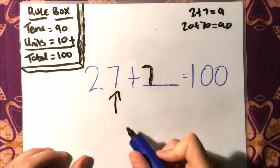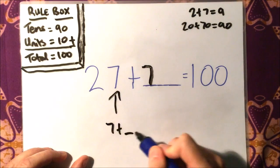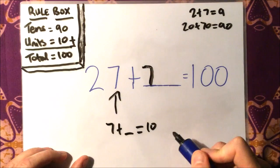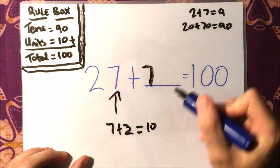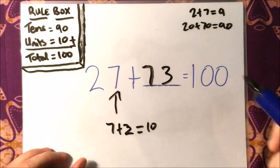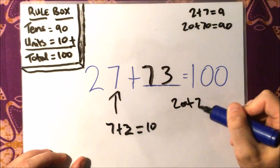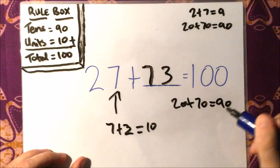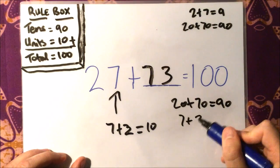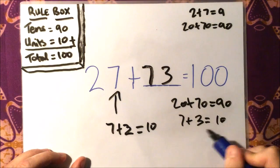Then I think about the 7. What do I need to add to 7 to make 10? I need to add 3, so I put 3 for my units. 20 add 70 makes 90, and 7 add 3 makes 10, and I know that together will make 100.